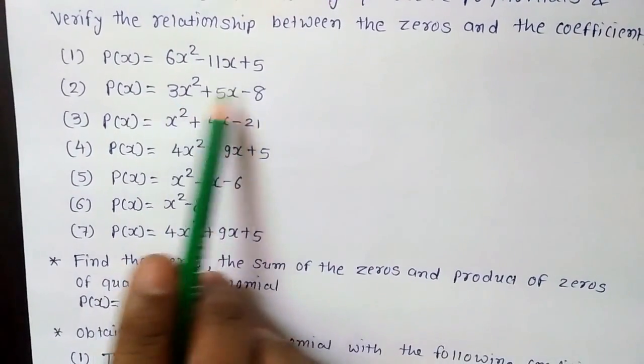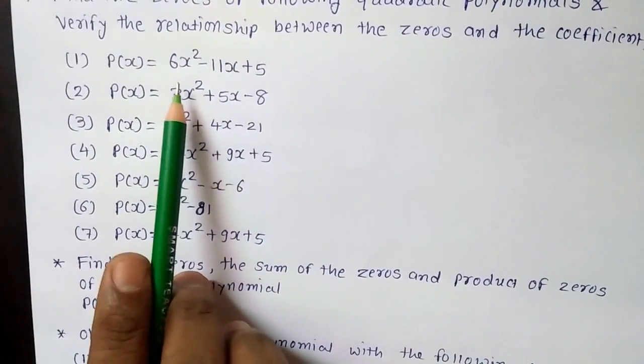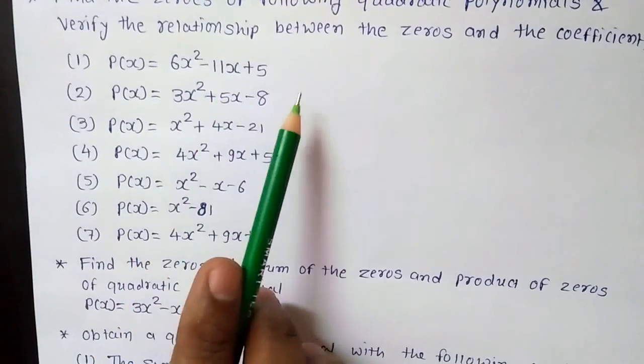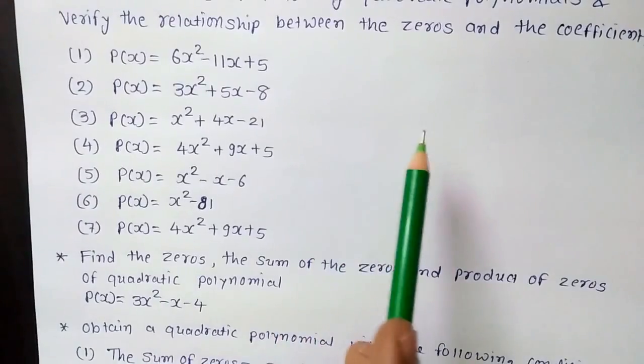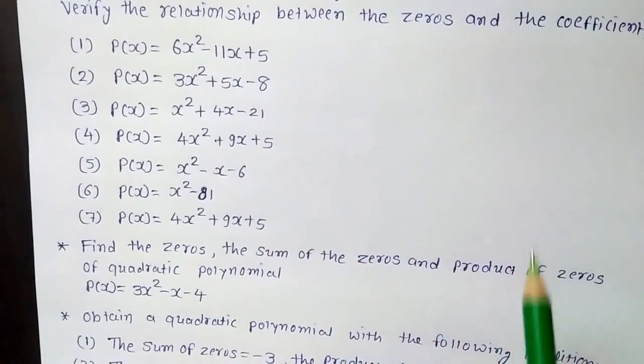As well as whatever the values of the zeros you are getting by the factorization method, those two values you need to do the sum and product. And then you have to compare and you have to verify the answer.